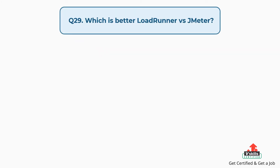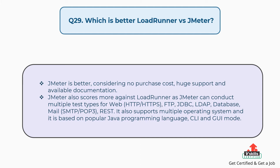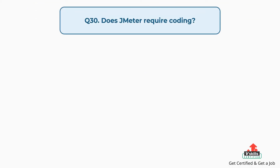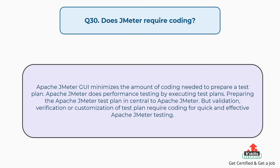Question 29: Which is better — LoadRunner versus JMeter? JMeter is better considering no purchase cost, wide support and available documentation. JMeter can also conduct multiple test types for web (HTTP/HTTPS), FTP, JDBC, LDAP, database, mail (SMTP/POP3), and REST. It supports multiple operating systems, is based on Java programming language, and provides both CLI and GUI modes.